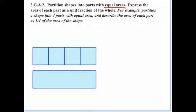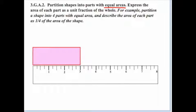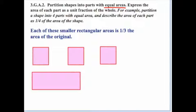Using the rulers, students can mark where to cut each smaller rectangle in half, so now they have eight equal parts, and each of those smaller rectangular areas is one-eighth the area of the original. Students could also create a rectangle that is three inches long and easily measure off and split this into three equal areas. Each of those smaller rectangular areas is one-third the area of the original.